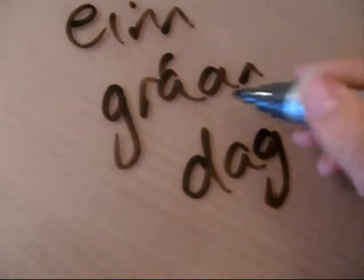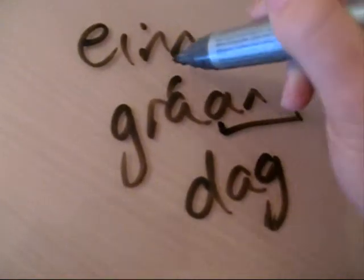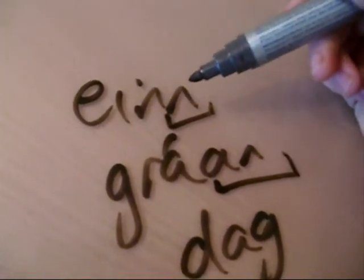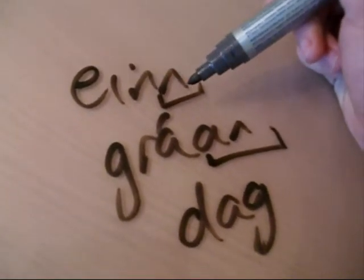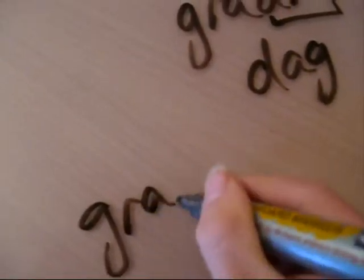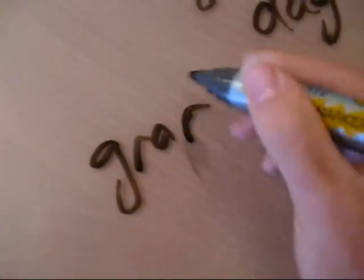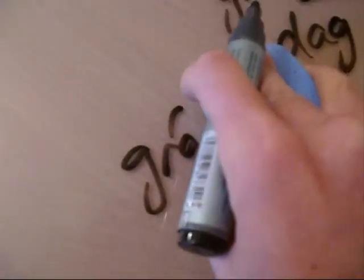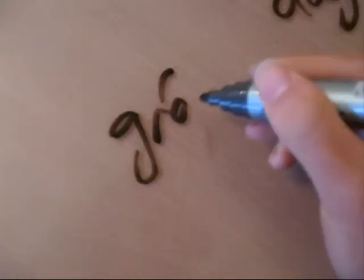Both of these adjectives are in the accusative form, which here happens to be the same as the nominative form. The accusative form of grár — putting it in the accusative — you take away the R ending and add AN. It's masculine, so it all just clicks together.